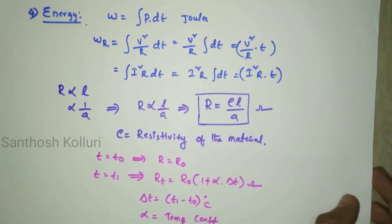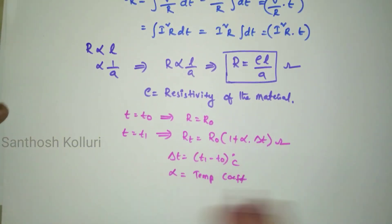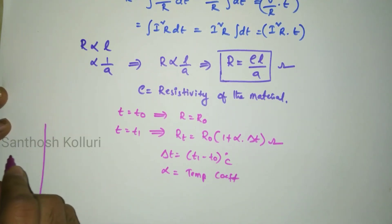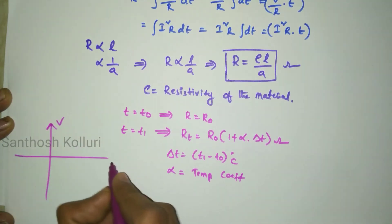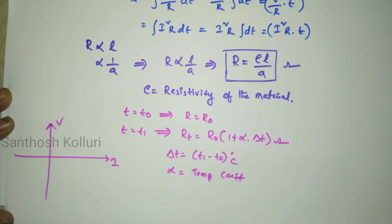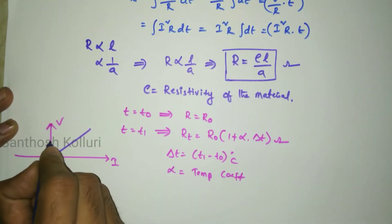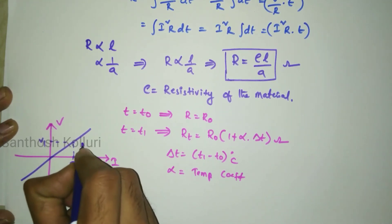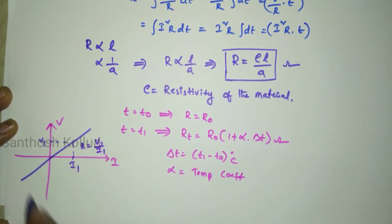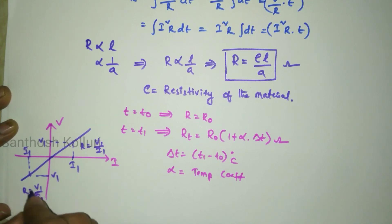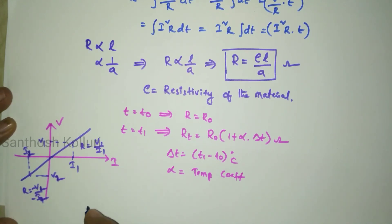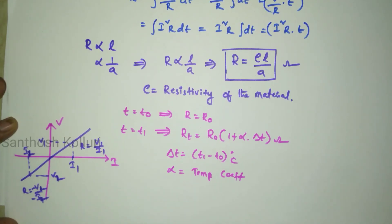The VI characteristics of a resistor can be drawn with V on the Y axis and I on the X axis. As per the linear relation, the curve is linear in nature. The resistance R is the slope V1 by I1, and this linear relationship holds in both the positive and negative zones. Resistivity is the capacity of opposing the flow of electrons, provided that the temperature is constant.